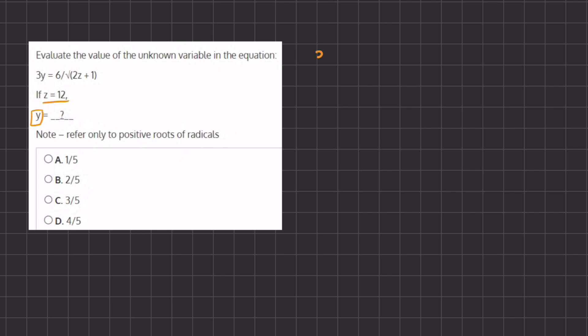We have 3y equals 6 divided by the square root of 2 times z, which is 12, plus 1.